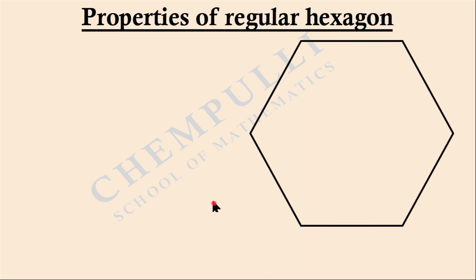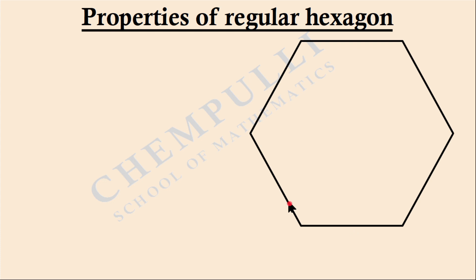Today we are going to learn the properties of a regular hexagon. A regular hexagon means all sides are equal and all interior angles are also equal. That type of hexagon is called a regular hexagon.